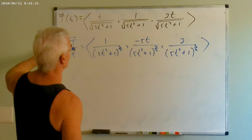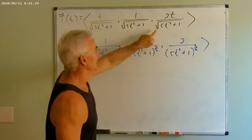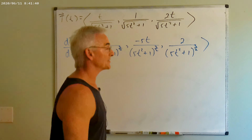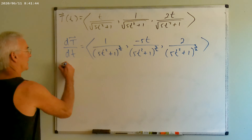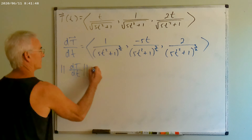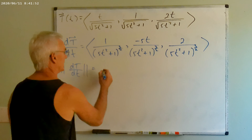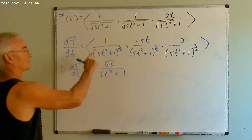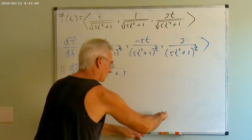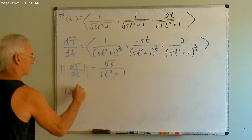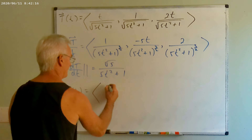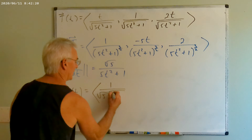Multiplying the velocity vector by the reciprocal of that quantity gives the unit tangent vector. After canceling the twos, the components are: t over √(5t²+1), one over √(5t²+1), and 2t over √(5t²+1). To verify it's a unit vector, squaring the numerators gives 5t²+1, and squaring the denominator also gives 5t²+1, confirming the sum of squares equals one.